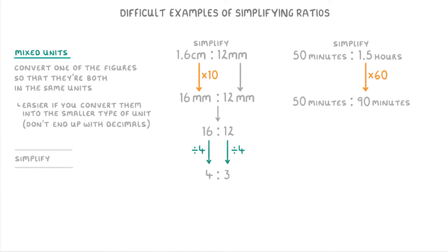And now that they both have the same units, we get rid of the minutes so that we're left with just 50 to 90. And we can then simplify it by dividing both sides by 10 to get 5 to 9.